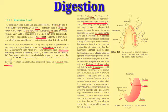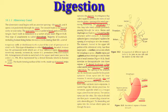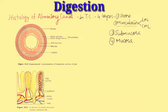The last portion of the small intestine is the highly coiled part called the ileum. The ileum opens into the large intestine. The large intestine is divided into three parts: cecum, colon, and rectum. Now let's discuss the histology of the alimentary canal.